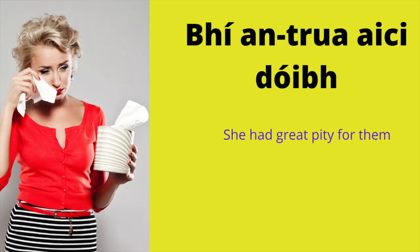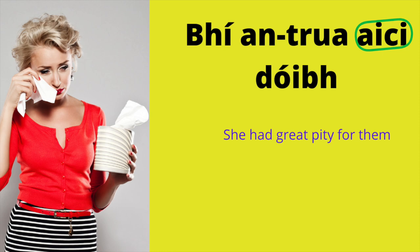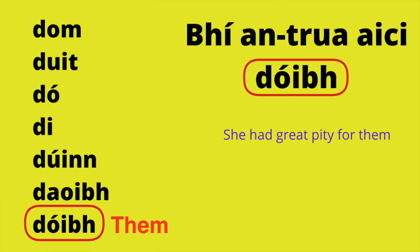'Bhí an-trua aici dóibh.' Her heart went out to them, or she had great pity for them. 'Bhí an-trua' means she had huge sympathy, her heart was breaking. 'Aici' means the sympathy or sorrow was on her — it is the preposition for 'on her'. 'Dóibh' means 'to them', so it's like going from her to them. Her heart was breaking for them.